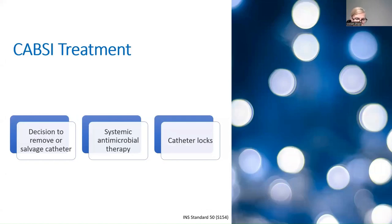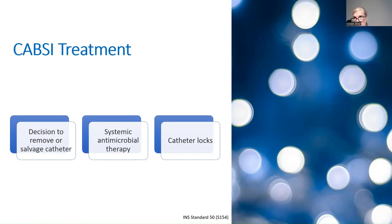For CAPC treatment, best practice recommendations include IV antimicrobial therapy, catheter locks, and the decision whether to salvage or remove the catheter. The decision to remove or salvage is based on patient stability, the responsible pathogen, and loss of access — if the patient has had multiple catheters and only one site remains, you'd try harder to salvage that catheter compared to a patient experiencing their first infection.